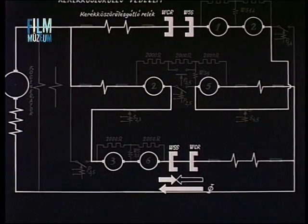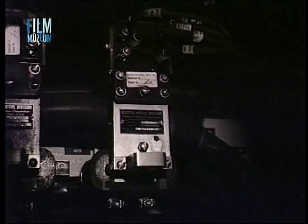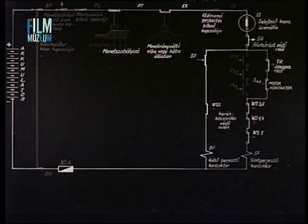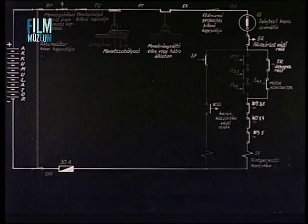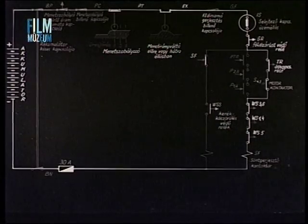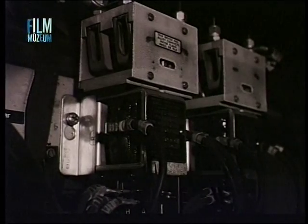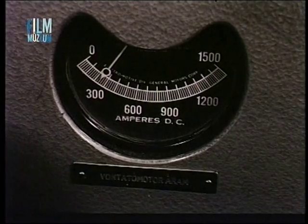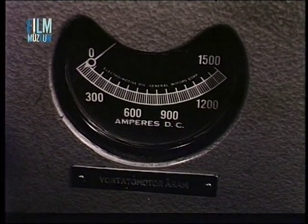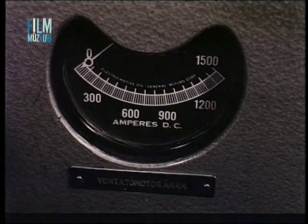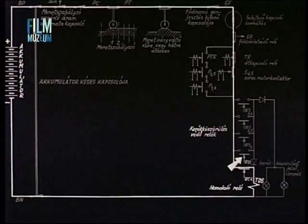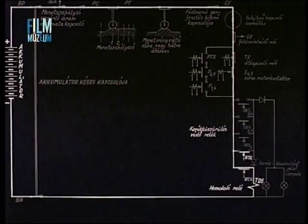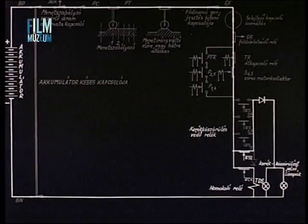If this does not stop the wheel slip, the WSS relay also activates. The WSS relay's opening contact then interrupts the operating current of the BF excitation contactor. The BF excitation contactor then interrupts the main generator's external excitation, thereby reducing motor current and tractive effort. When the wheel slip detecting WSS relay activates, it also switches on the wheel slip indicator lamp.